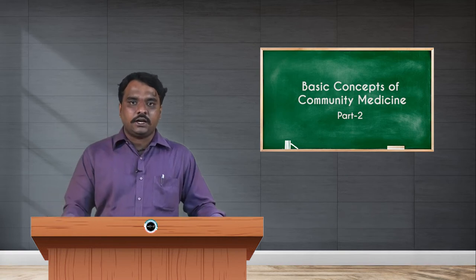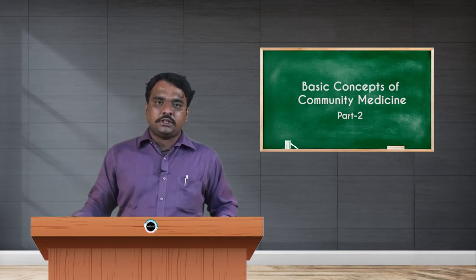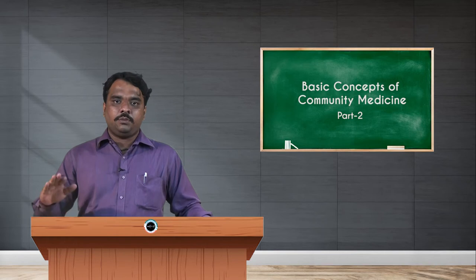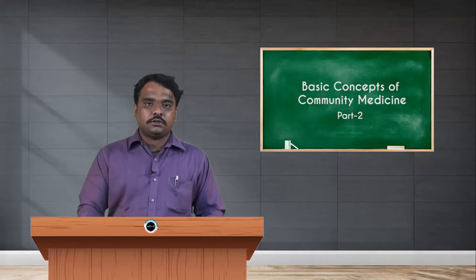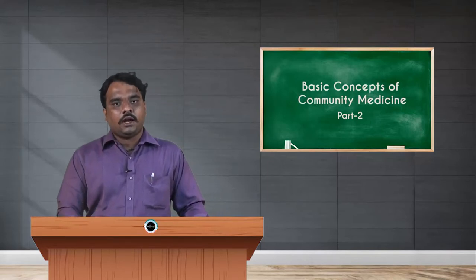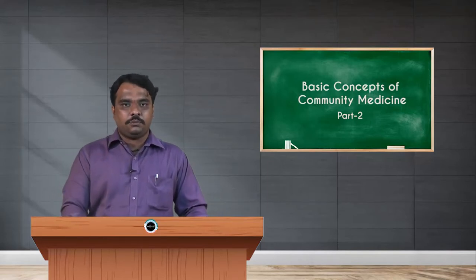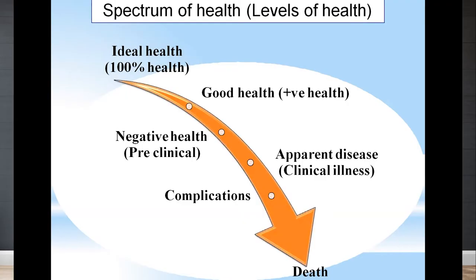The next lower stage is good health, where the individual will have impairment or imbalance in any one of those seven wellness wheel aspects, but can get back to normal due to the body's variations. This is considered good health, also called positive health. Below that is negative health.